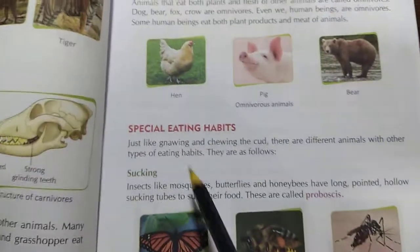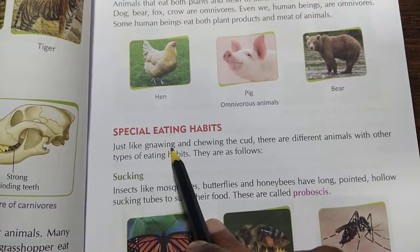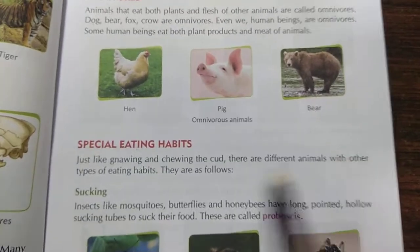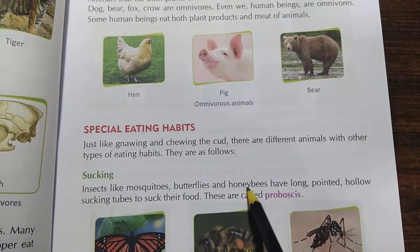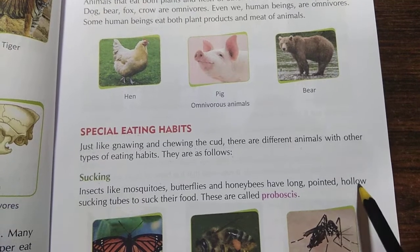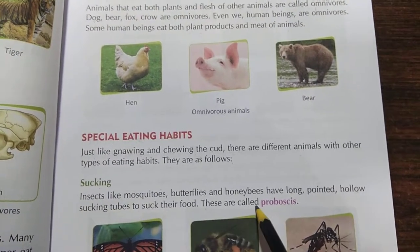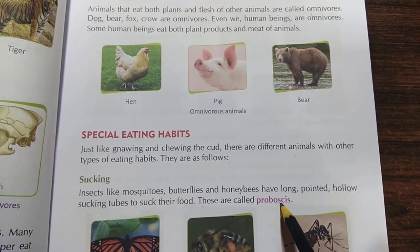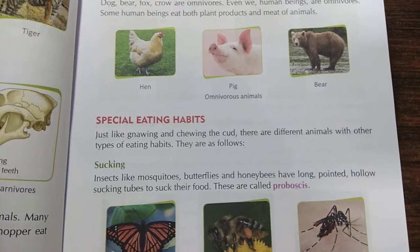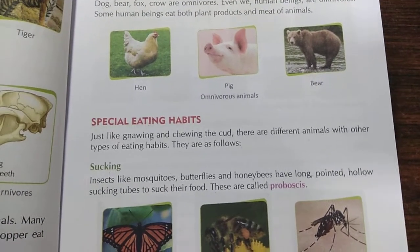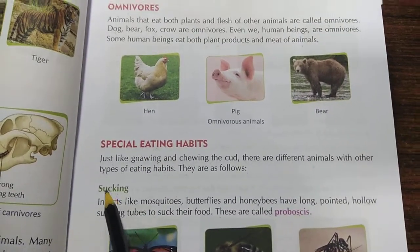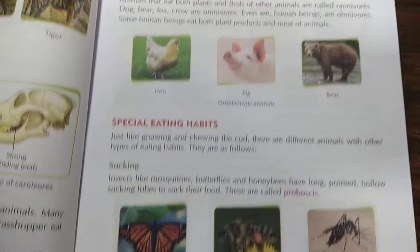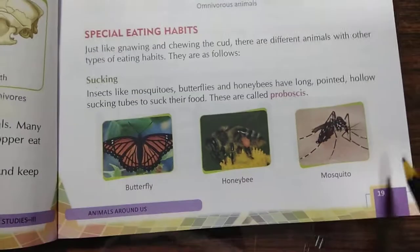Now we see special eating habits. Just like gnawing and chewing the cud, there are different animals with other types of eating habits. First: sucking. Insects like mosquitoes, butterflies and honeybees have long, pointed, hollow sucking tubes to suck their food. These are called proboscis. Mosquitoes use this long tube to bite and suck blood from humans. Examples shown: butterfly, honeybee and mosquito.